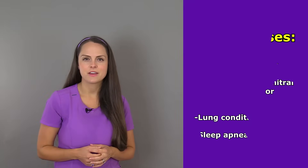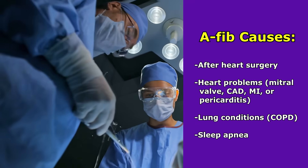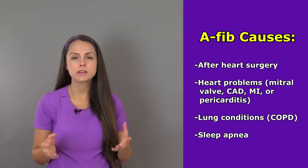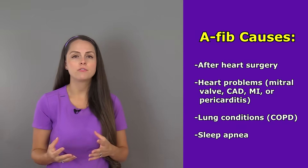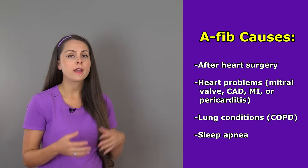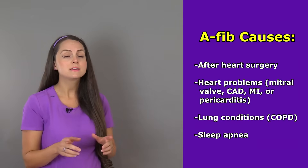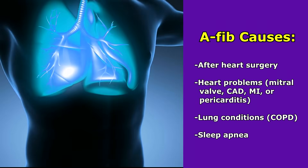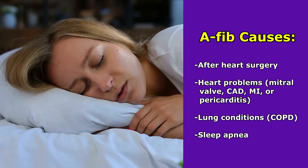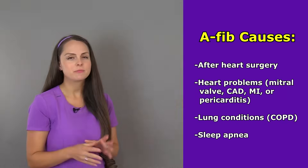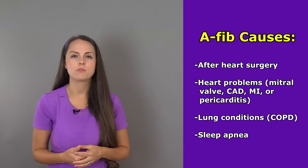What are the causes of AFib? It can happen after heart surgery — a lot of times after a person has some procedure on their heart it can cause them to enter this rhythm — or they have a significant heart problem like a valve problem, especially problems with the mitral valve, or coronary artery disease, a heart attack, or pericarditis. Lung conditions like COPD can also affect this, and further studies have shown that patients who have sleep apnea are at risk for developing atrial fibrillation, so we want to make sure we're screening patients for sleep apnea.